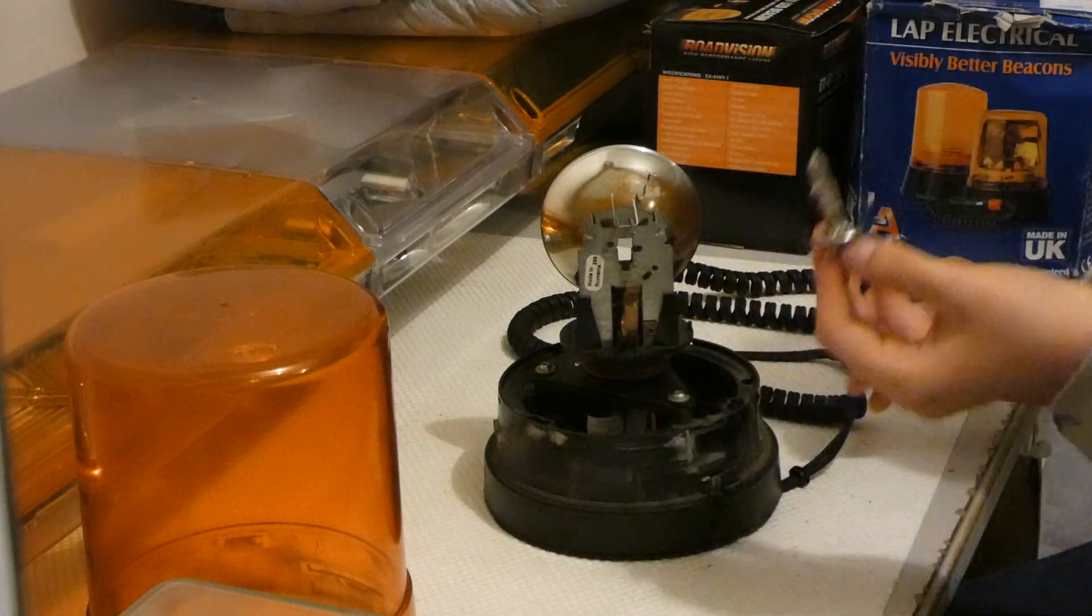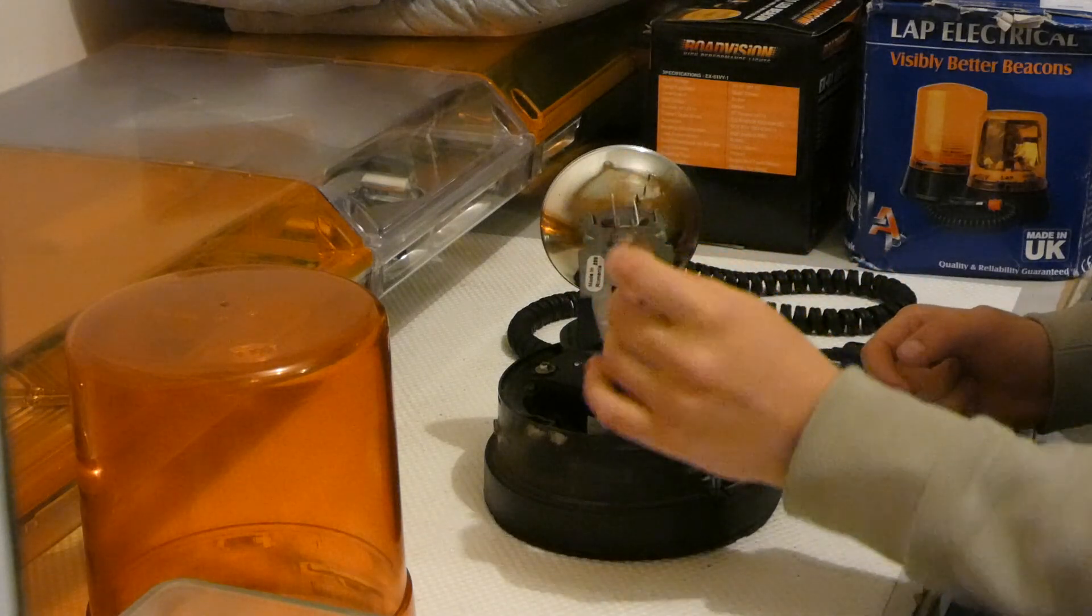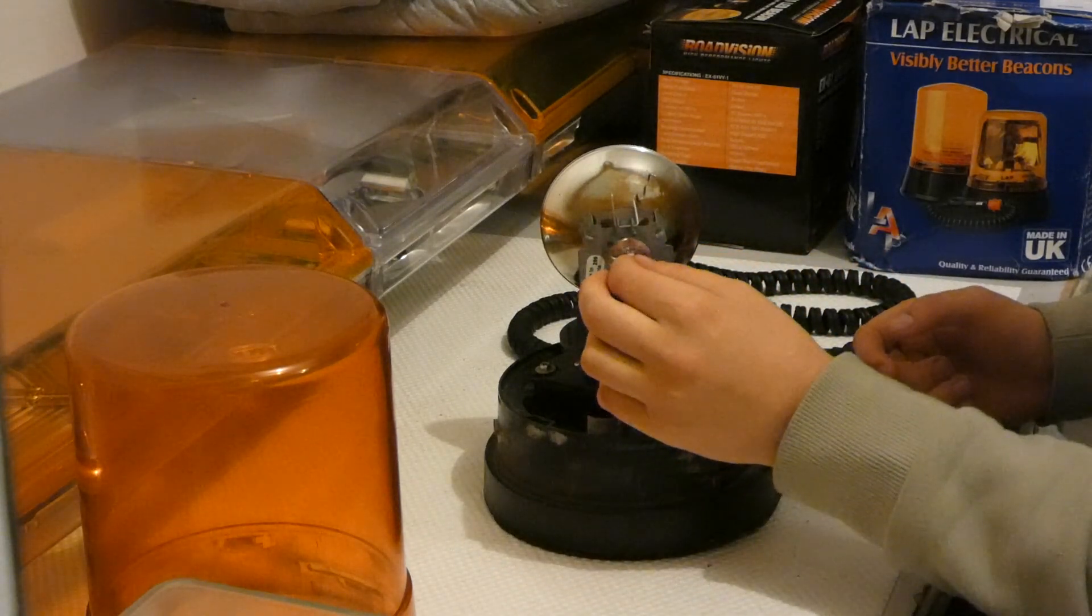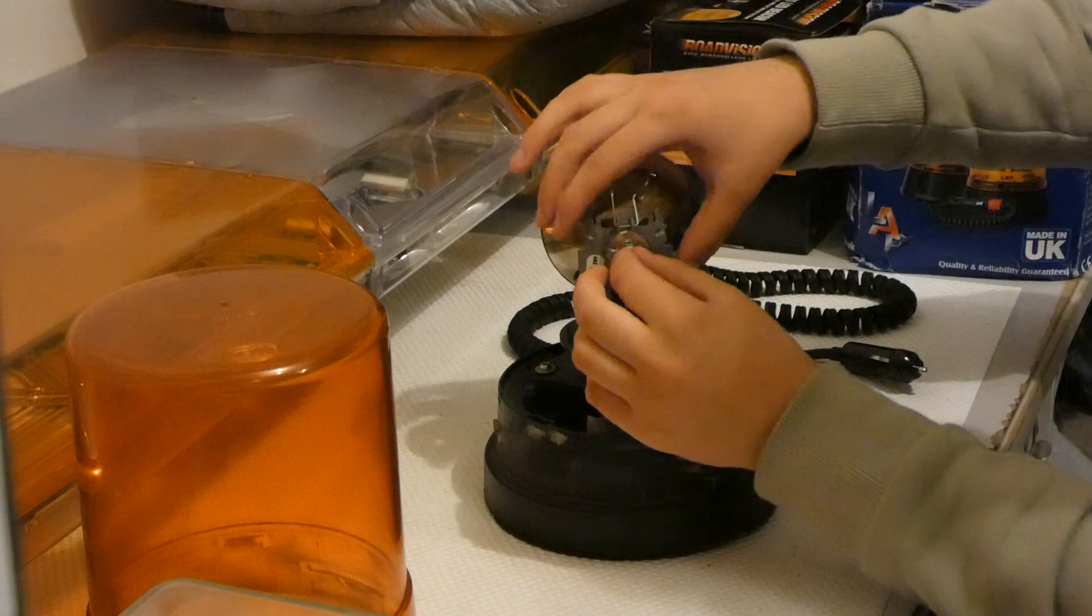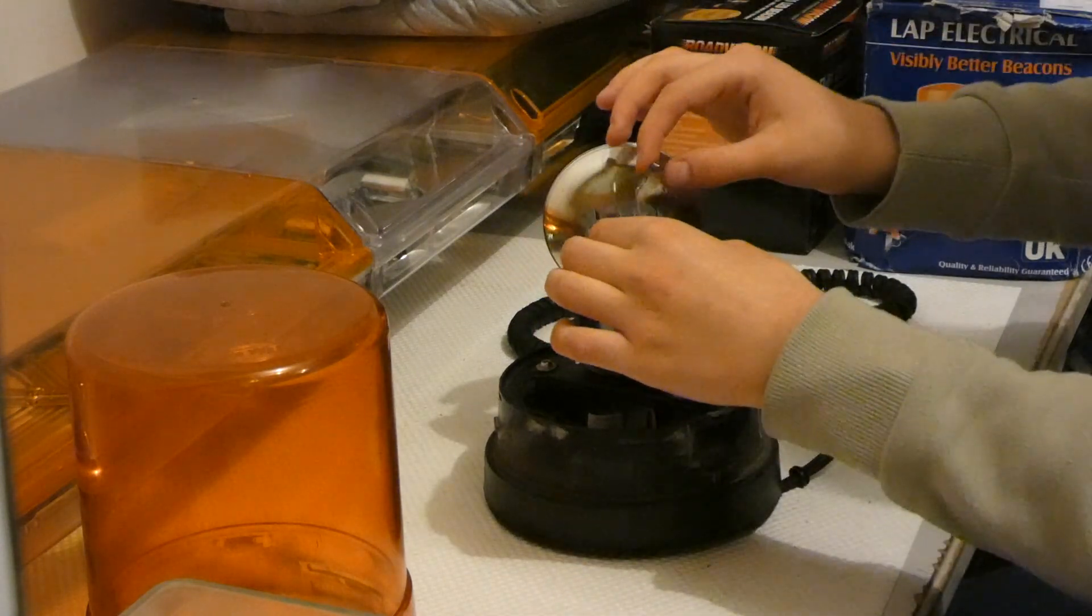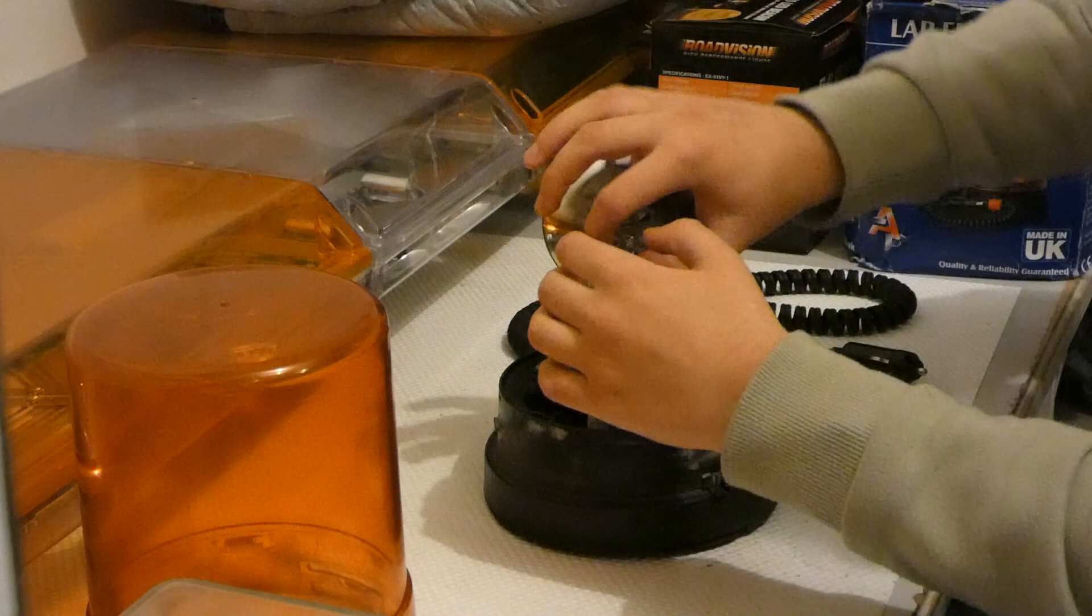So as this beacon does not need a new bulb, we will go ahead and insert the existing bulb back into the reflector assembly like so. Then slide down and replace the metal arm.